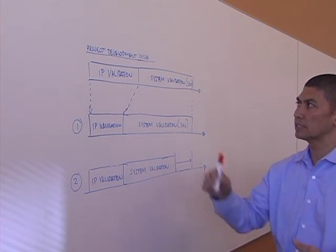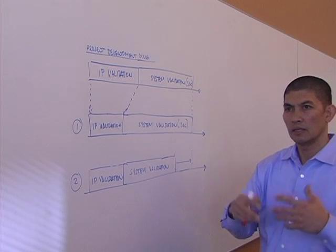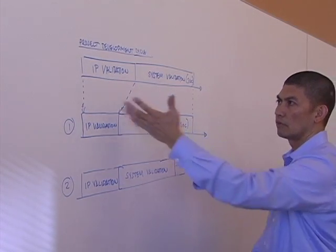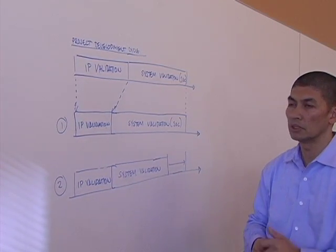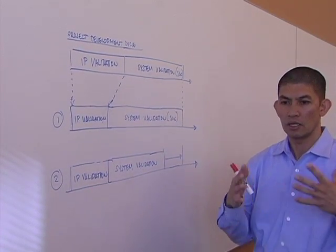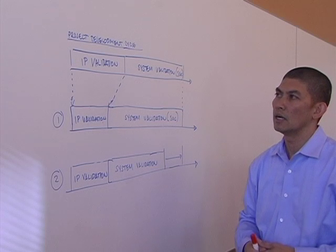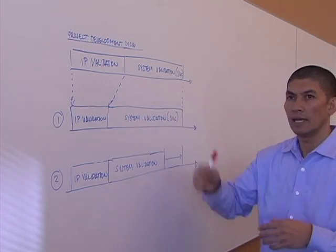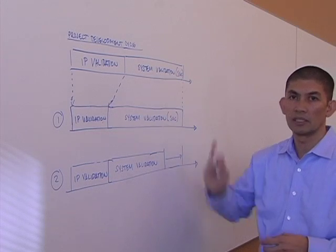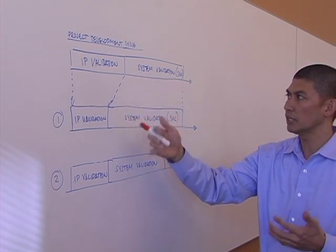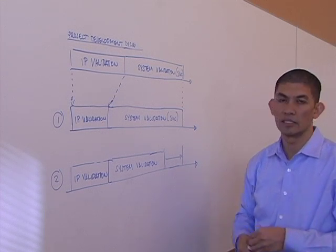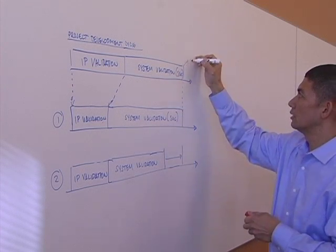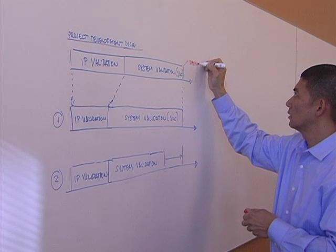When you look at a typical project development cycle, where a customer or designer would initially do a lot of our IP validation, for example, they'll validate a specific IP. It could be a video IP, it could be some type of modem IP. But they need to do some initial validation before they port it over to a complete SOC to do system validation. So they'll first initially go to some IP validation, and then eventually get into a system validation type of development, and then at that point be able to then go ahead and tape out this SOC.